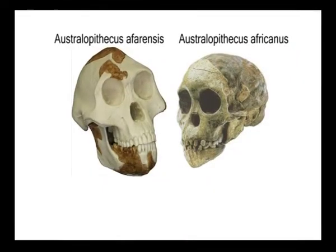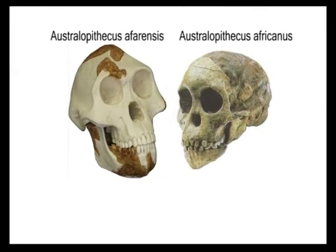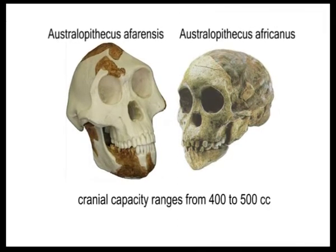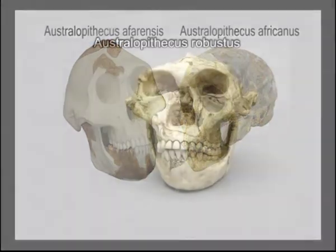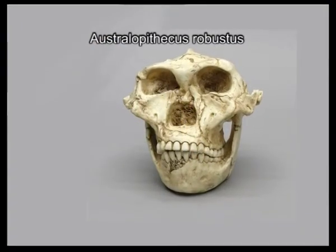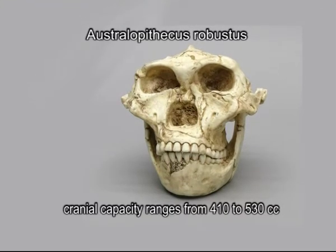Cranial capacity: The range of variation is quite considerable. The skulls of Australopithecus afarensis and Australopithecus africanus range from 400 to 500 cc, and Australopithecus robustus ranges from 410 to 530 cc. Thus the general endocranial size of Australopithecus does not differ markedly from that of gorilla and chimpanzee. However, in relation to body size, Australopithecus shows a larger brain capacity proportion than the apes.